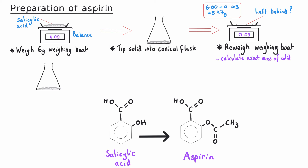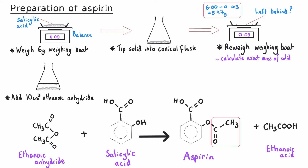Then we move on to the chemical reaction itself. We add 10 cm³ of ethanoic anhydride as our source of the acyl group for aspirin. In theory we could use ethanoyl chloride, but this would be a much more violent reaction, harder to control, and would produce toxic HCl fumes. Ethanoic anhydride doesn't react as readily, so we need to use a concentrated acid catalyst — phosphoric acid — being careful to add only about 5 drops, as it is corrosive. We could also wear gloves to protect our skin.